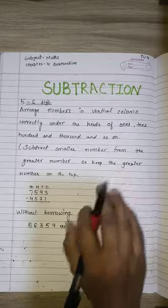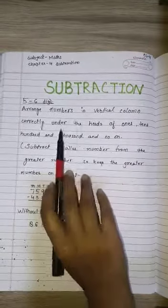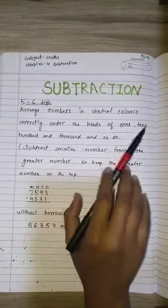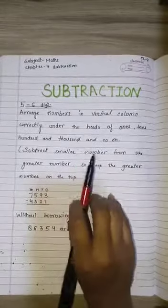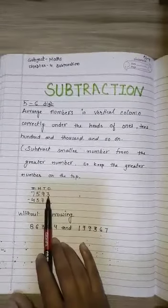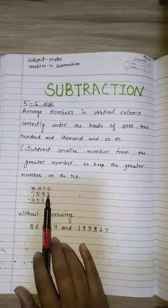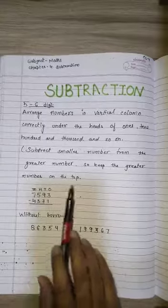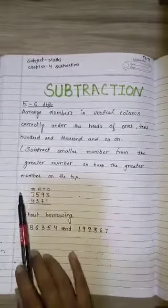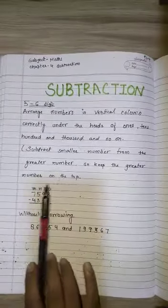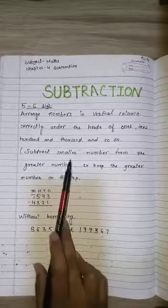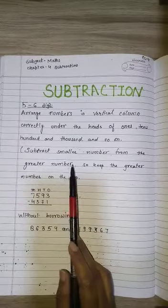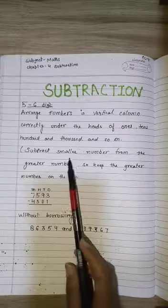Firstly, what we have to learn: arrange numbers in a vertical column correctly under the heads of ones, tens, hundreds, thousands, ten thousands, and lakh. We have to subtract the smaller number from the greater number, keeping the greater number on top.